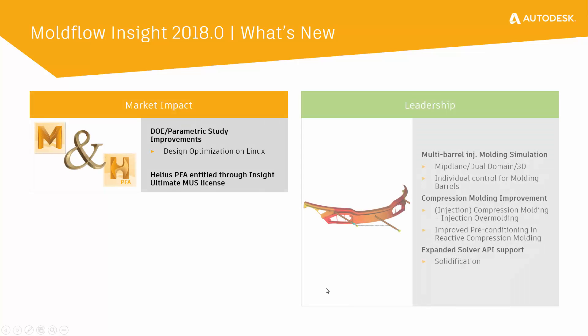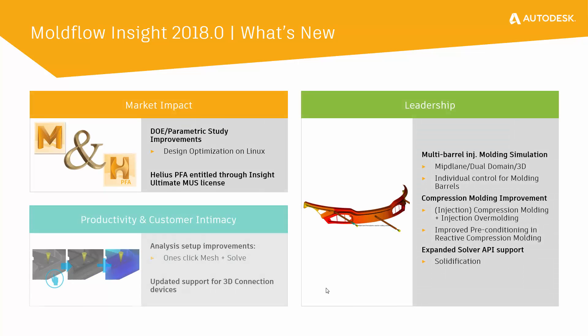In terms of new functionality, we grouped these things in three buckets: market impact, technology leadership, and productivity and user improvements. I'll go through those in different sections.